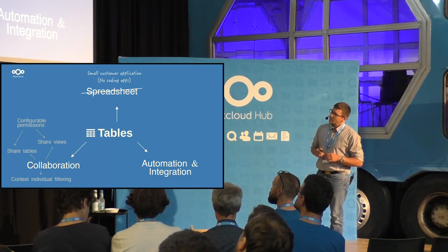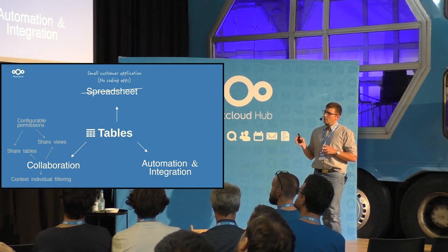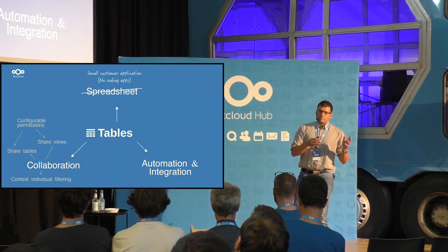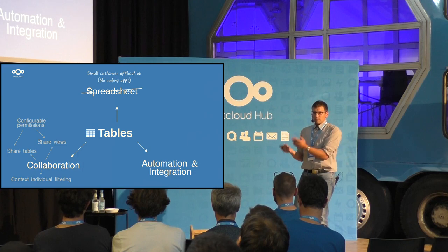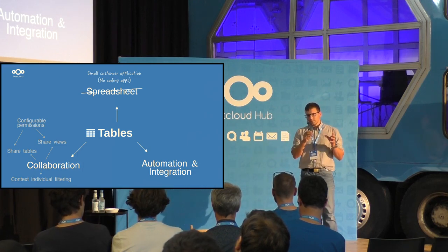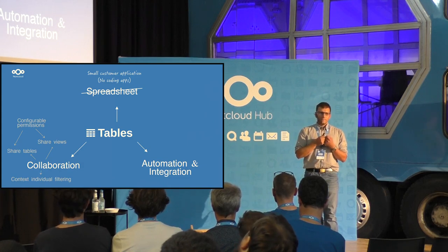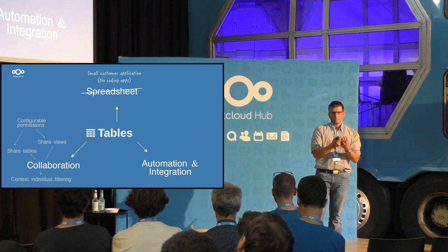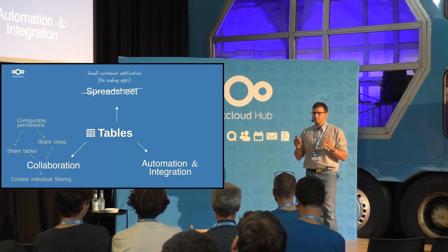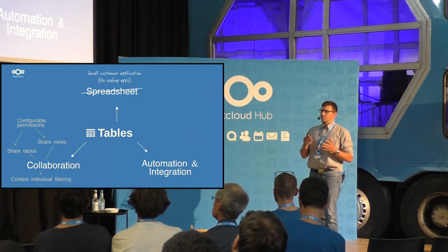What's also possible is filtering views with context-individual filters. You can say the responsible field equals your username, and when you share this view with other users, the Tables app will automatically insert the user ID of each respective user. That makes it a little bit magic — you don't have to create so many views, and you can share via a group without having to do it for every individual user.